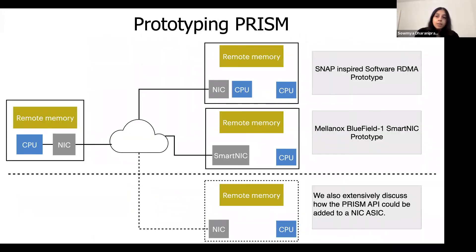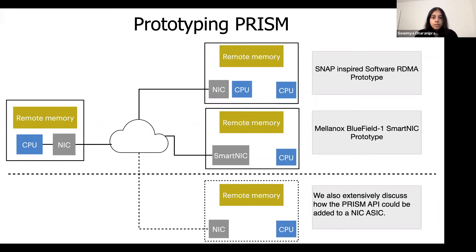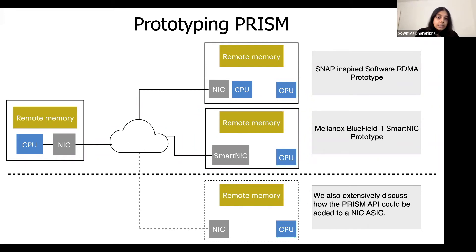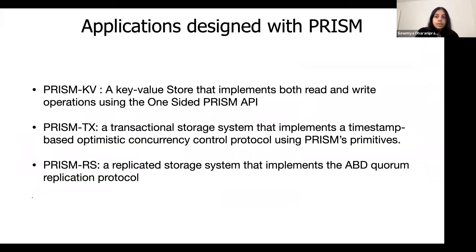We prototyped our PRISM primitives on two different network stacks. One is a SNAP-inspired software RDMA prototype that partitions some CPU cores dedicated for packet processing. The second is a SmartNIC prototype that uses the Mellanox Bluefield 1 SmartNIC to execute the PRISM primitives. In the paper, we also extensively discuss how our primitives could be implemented on a hardware NIC ASIC while reusing many of the underlying mechanisms that already exist in today's NICs.